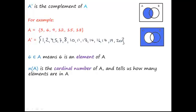If you have a small letter n with A in brackets, that means n is the cardinal number of A. Basically, it says how many elements are in A. For example, here we had A with 1, 2, 3, 4, 5, 6 elements in A. So this would be equal to 6.